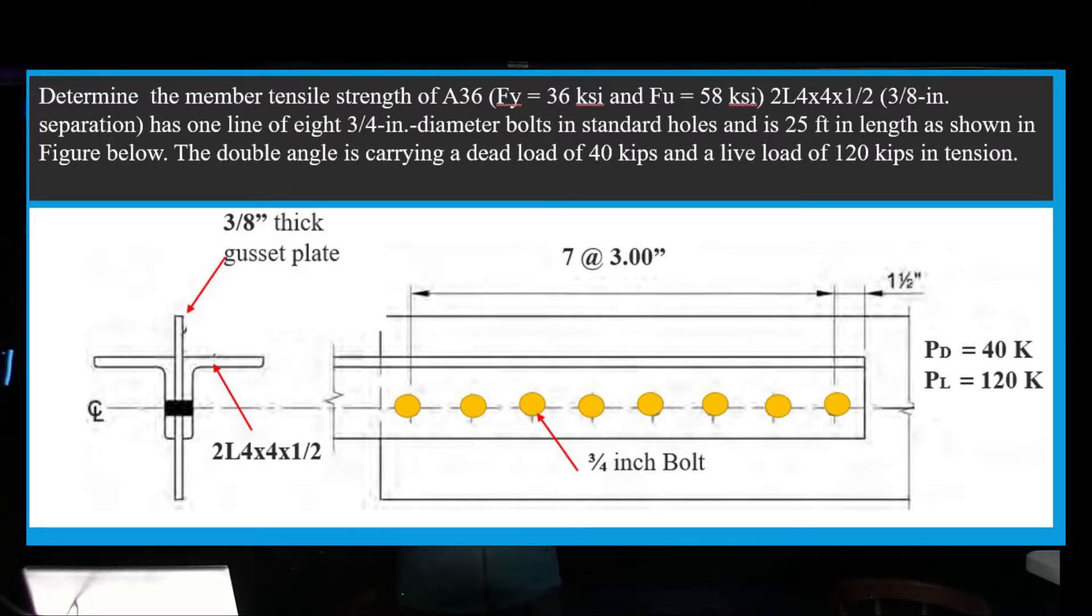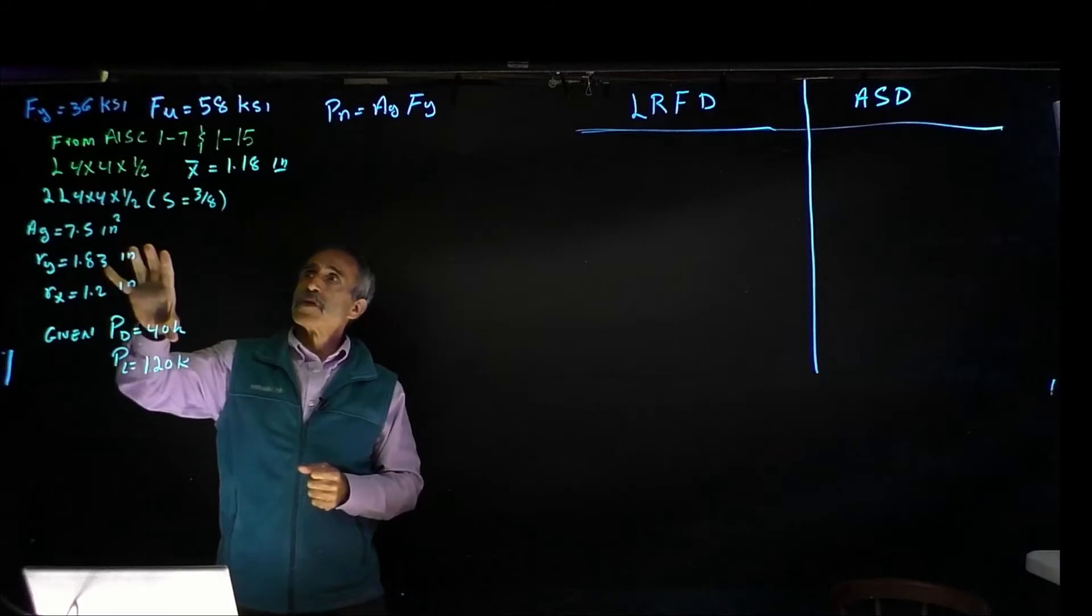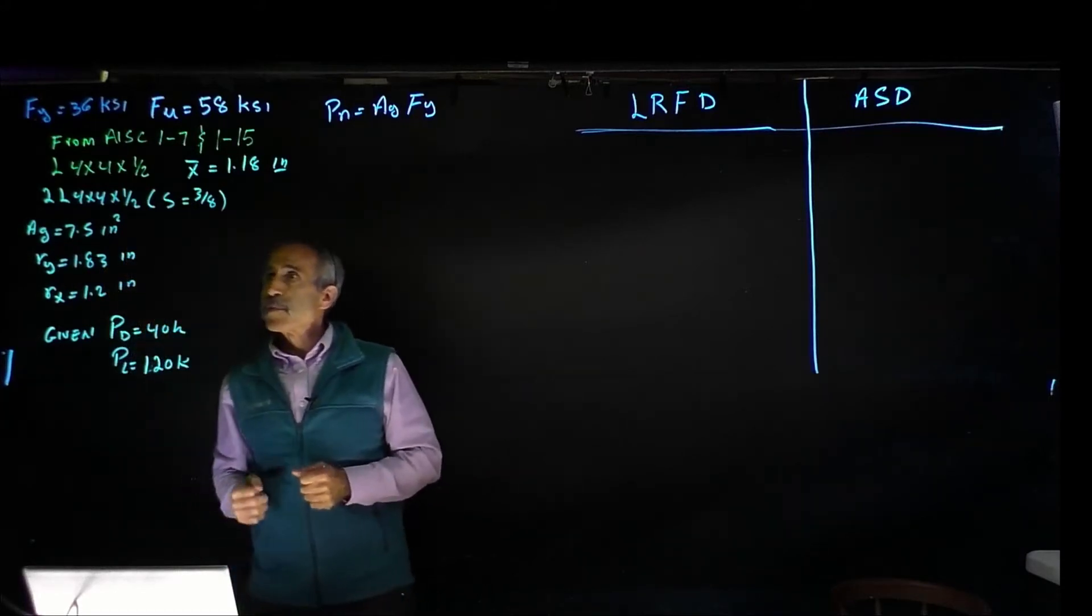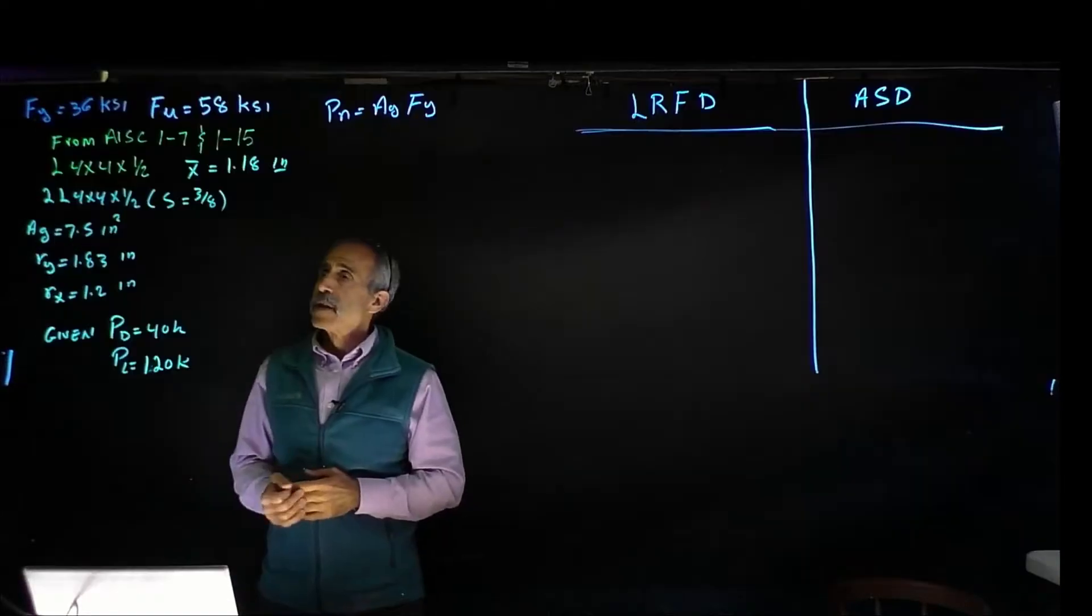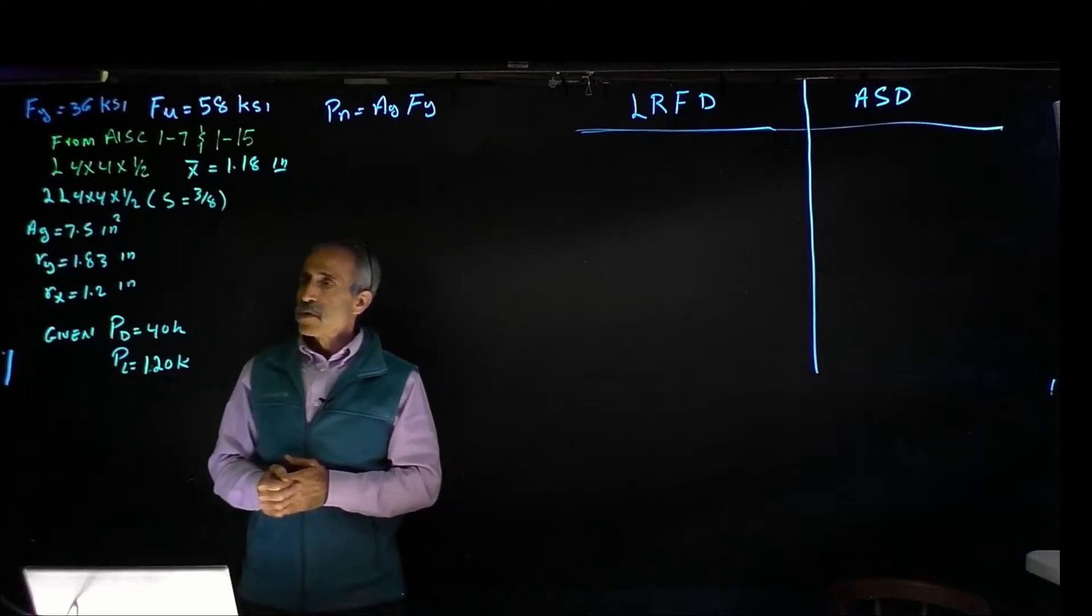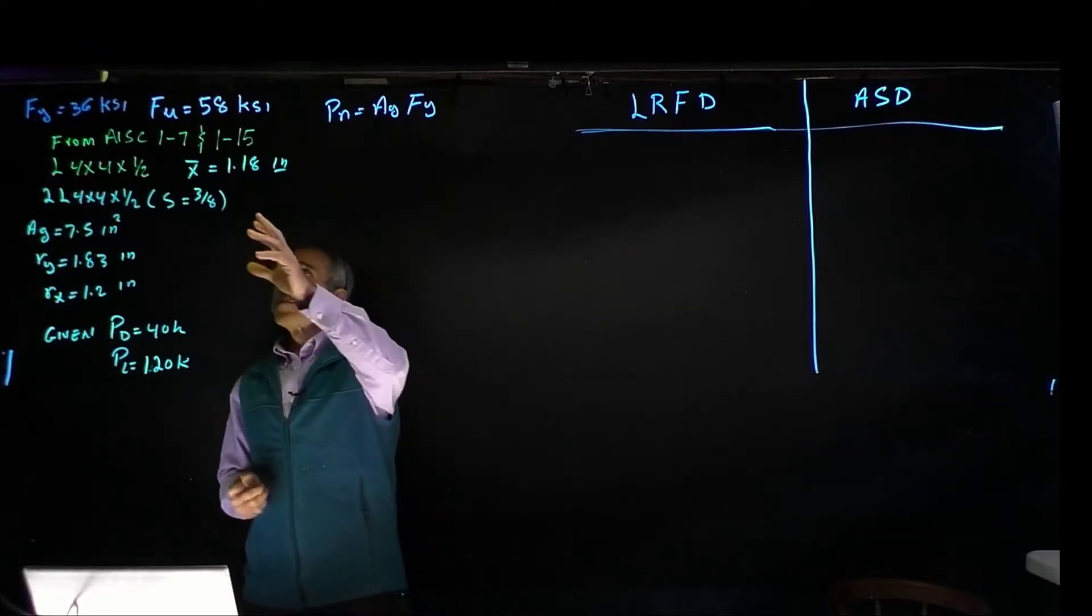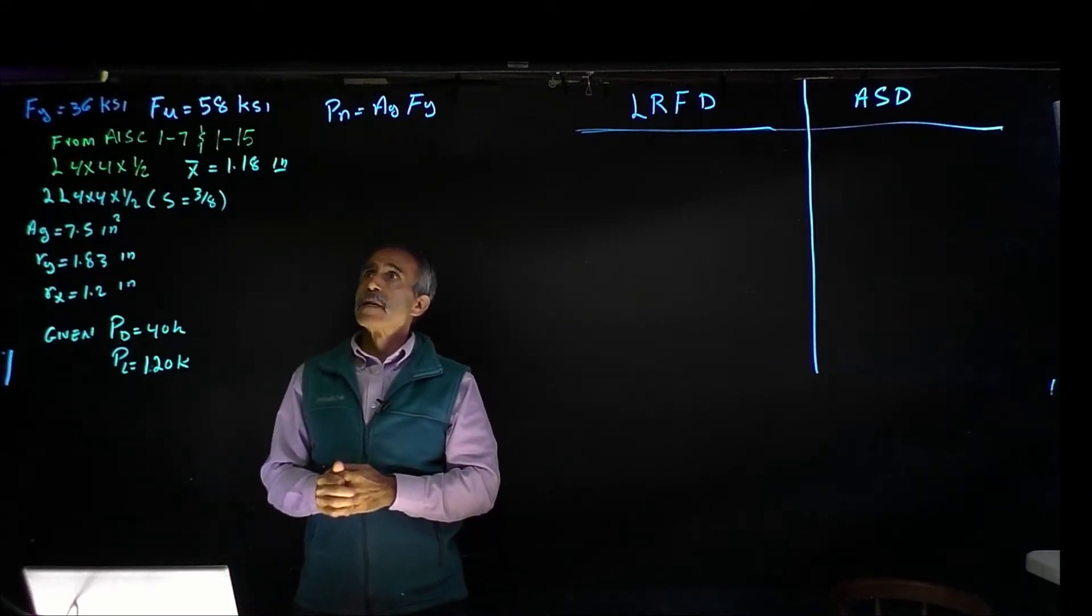Let's get to work. We have our dead load of 40 kips and live load of 120 kips. From AISC tables 1-7 and 1-15 we get all the required information. For L4 by 4 by 1/2, we have x̄ equals 1.18. For a double angle 4 by 4 by 1/2 with 3/8 inch spacing, we have AG equals 7.5 square inches, RY equals 1.83, and RX equals 1.2. This is an A36 steel and FU is 58 KSI.